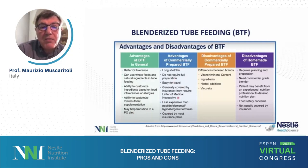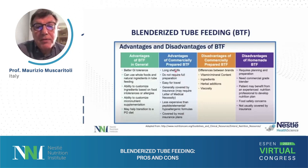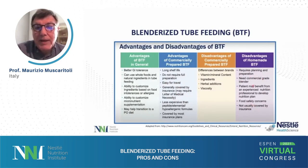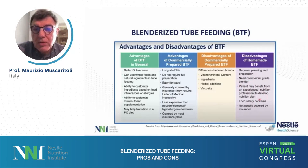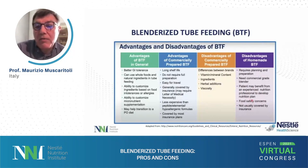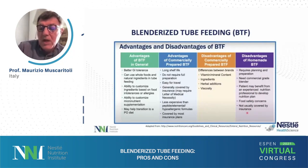The advantages of commercially prepared blender tube feeding are quite substantial — including long shelf life, no requirement for full preparation, and ease of travel. The disadvantages of homemade blender tube feeding include the need for planning and preparation, the need for a commercial-grade blender, the benefit of an experienced nutrition professional to develop a nutrition plan, food safety concerns — particularly the risk of contamination — and the fact that it is not covered by insurance since it is regular food and not normally reimbursed.